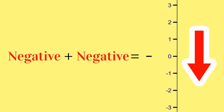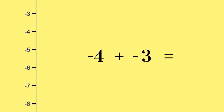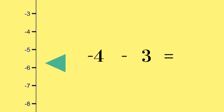The same is true if you add two negative numbers together. For example, if we take negative 4 plus negative 3, the plus sign disappears to leave us with negative 4 subtract 3. We can then start at negative 4 on the number scale and count down by 3, where we reach the answer of negative 7.